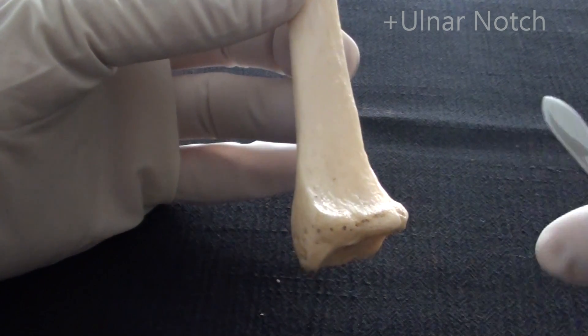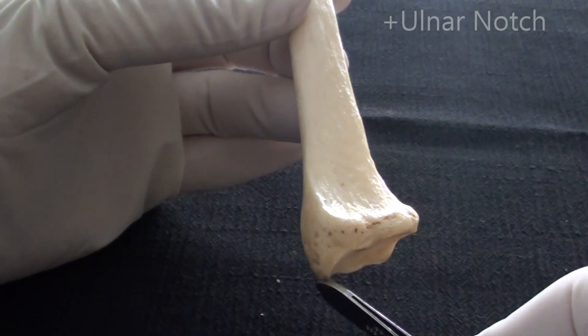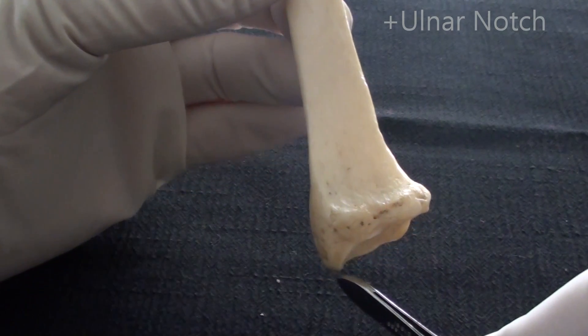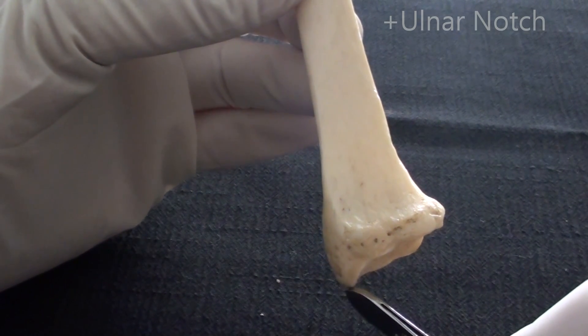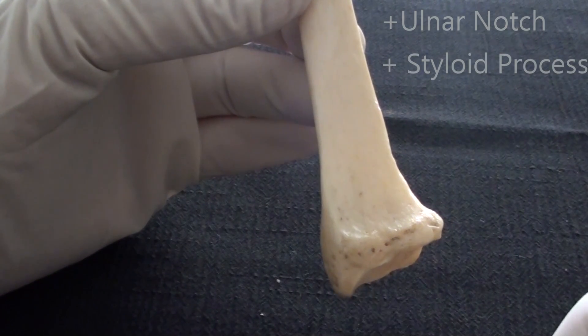Just like ulna, we're going to have same type of projection, oriented more inferiorly, except it is less prominent, but it is also bearing the same name. It is called the styloid process of the radius.